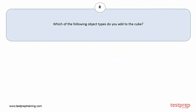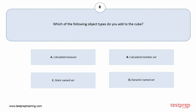Question number 8. Which of the following object types do you add to the cube? Your options are: A. Calculated measure. B. Calculated member set. C. Static name set. D. Dynamic name set. The correct answer is option D.